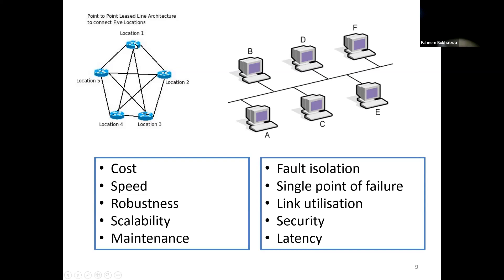In point-to-point with dedicated links, if you're connected to four other machines and you're only transferring a file to one of them, the other three links are idle — you're not utilizing them. Shared links in multi-point have higher capacity utilization because there are more users; as soon as one pair finishes transmitting, the next one in the queue takes over. So shared links have better overall capacity utilization.